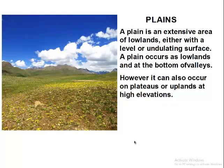When we talk about Plains, we are talking about an extensive area of Lowlands, either with a level or undulating surface. When we say a surface is undulating, it means a rolling surface. Sometimes on the surface you see some bumps — that is ups and downs — so you see the surface rolling. We call that an undulating surface.